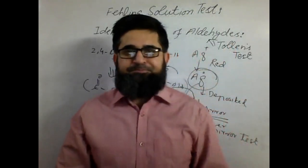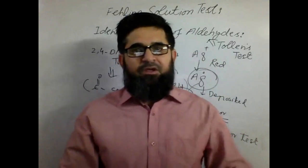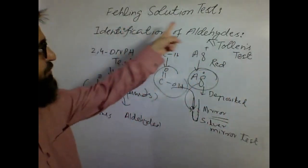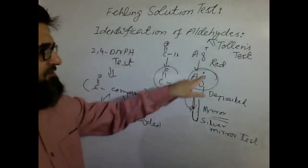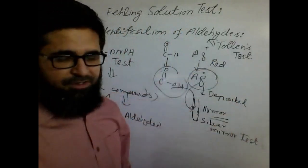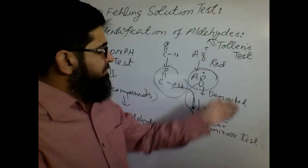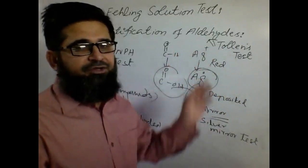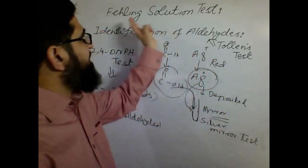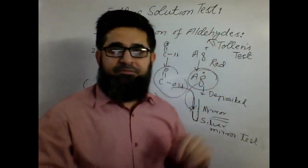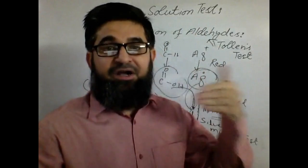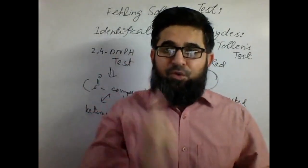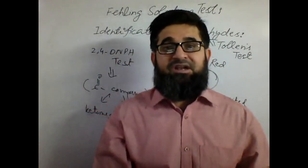At the same time, there is another test called Fehling's solution test. If you do not have access to the Tollens reagent and cannot apply Tollens test on aldehyde, then you can go for Fehling's solution test. That is also an alternative test for the confirmation of aldehydes — it confirms only aldehydes, like Tollens.